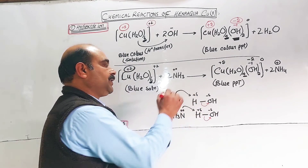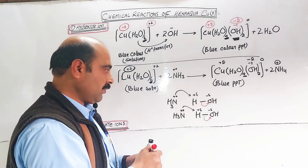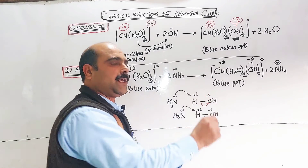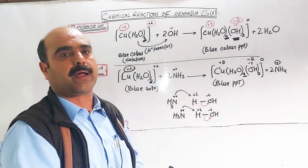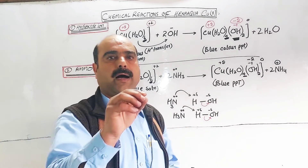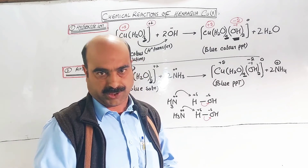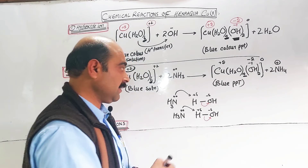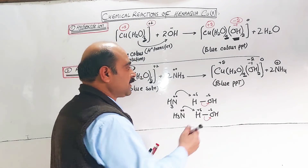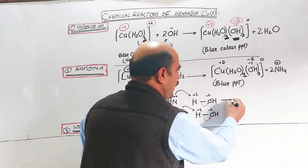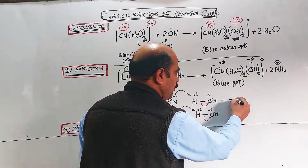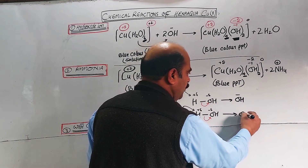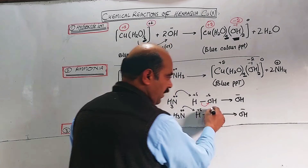Chemical reactions during which the hydrogen-oxygen bond in a water molecule is broken down are called hydrolytic reactions, and this process is known as hydrolysis. The hydroxide ion is formed as two water molecules undergo this hydrolysis.